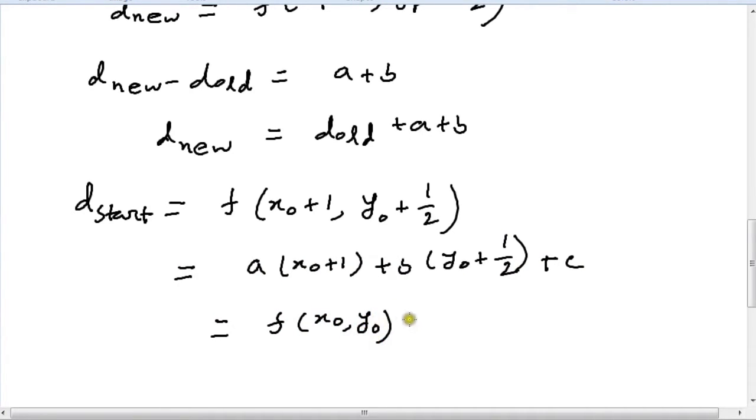And that will give us f(x0, y0) plus a plus b/2. It's actually a(x0) plus b(y0) plus c, which is a plus a plus b/2. So this portion becomes f(x0, y0), and as we all know, f(x0, y0) is 0, because x0, y0 is a pixel that's on the line.